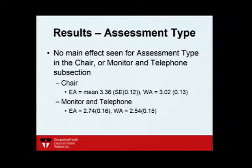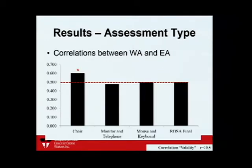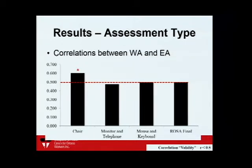There was no actual effect for the person doing the assessment for the chair, monitor, and telephone — very reasonably accurate scores for those. We also saw moderate correlations between worker scores and expert ergonomist scores, indicating that people were assessing their offices with reasonable validity compared to a trained professional.